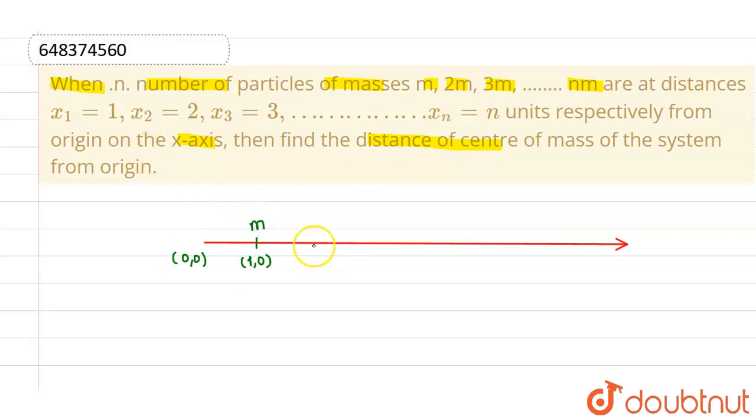Similarly, second particle is placed at (2,0) and its mass is 2m. Third particle, whose mass is 3m, is placed at (3,0) and this goes on till the last particle whose mass is nm and placed at (n,0).